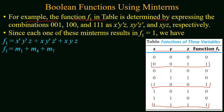For 0,0,1 the min term will be x'y'z. For 1,0,0 the min term will be xy'z'. For 1,1,1 the min term will be xyz. In the second step we combine all these min terms using boolean addition or the OR operation. So f1 will be equal to the sum of min terms, or using their designations, f1 = sum of m1, m4, and m7.